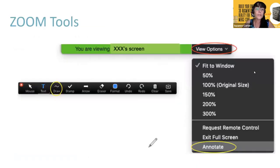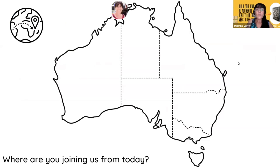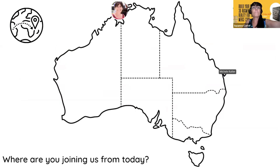During this session we will be interacting with the screen, and I just wanted to bring to your attention the annotation tool. At the top of your screen you'll see — you might need to mouse over — view options, and right at the bottom of view options is the annotate option. A bar will come up and you'll be able to draw, stamp, arrow, or write some text onto the screen. I'm coming to you from Darwin today and I'd like to ask people to mark on this map using that annotate tool where you're coming from. You can stamp with a star or a heart.